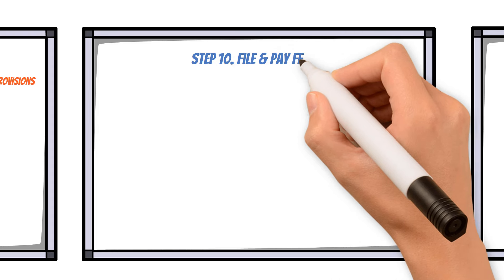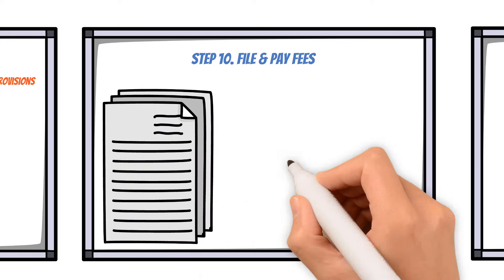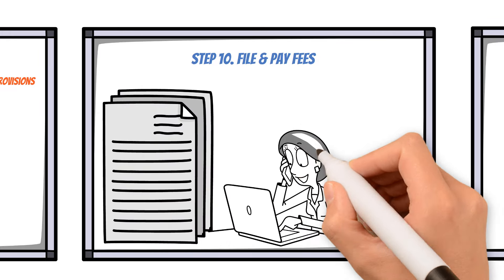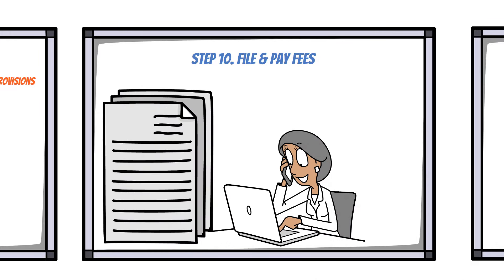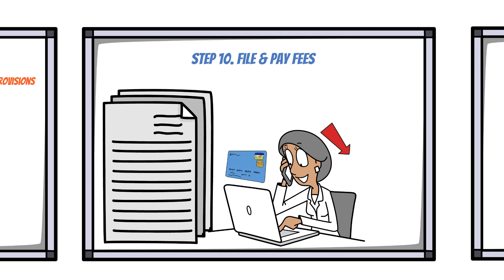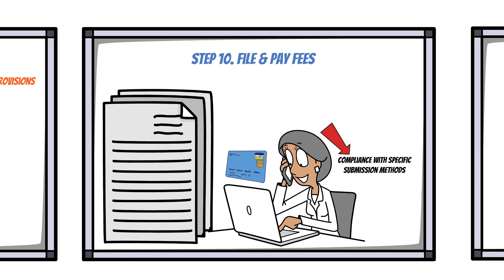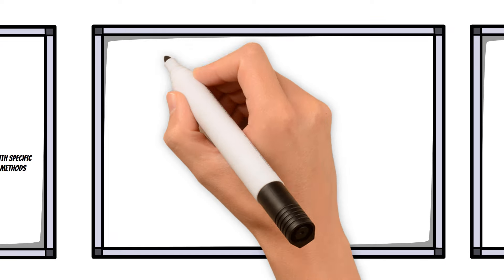Step 10: File and Pay Fees. Once your articles are complete, file them with the appropriate state agency, typically the Secretary of State, and pay any associated filing fees. Ensure compliance with specific submission methods designated by your state, be it online or via mail.